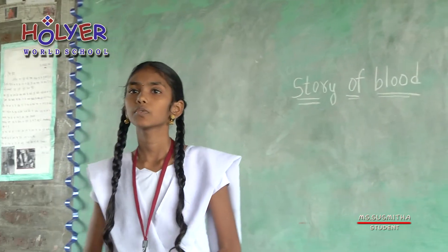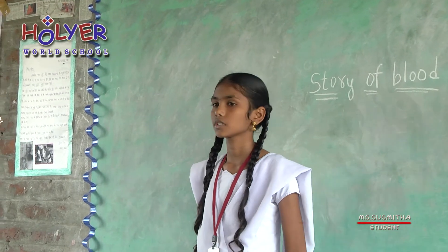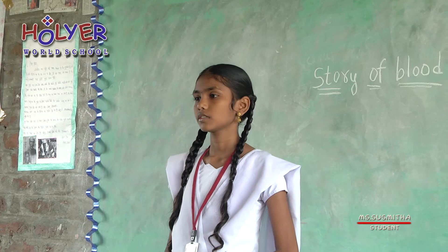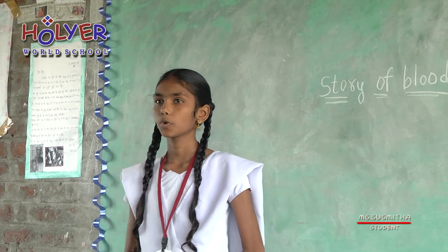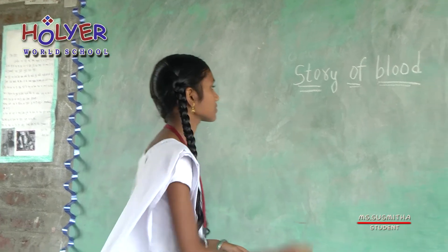Blood plays a vital role in our immune system and it helps maintain our body temperature. Normally, adult human beings have about 5 litres of blood.